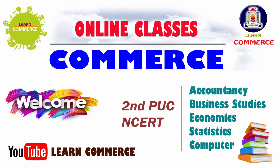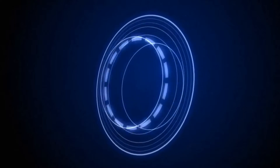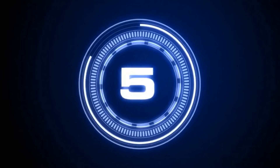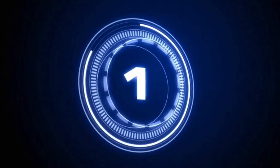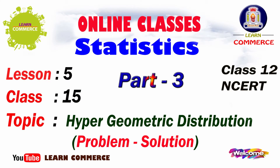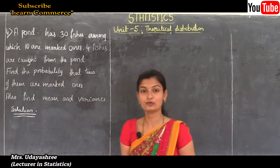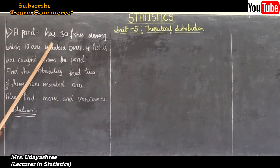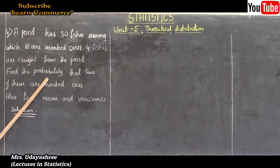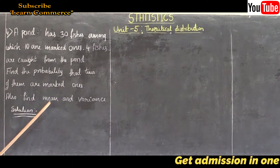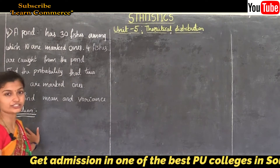Welcome to Learn Commerce PU online classes. Don't forget to like our video and subscribe to our YouTube channel for all updates. Welcome to second PUC Statistics online classes. Let's move to the fourth problem: a pond has 30 fishes, among which 10 are marked. Once 4 fishes are caught from the pond, find the probability that two of them are marked. Also find the mean and variance.